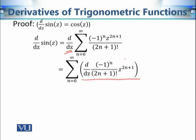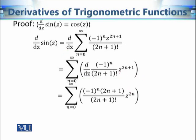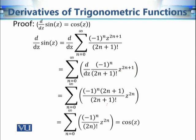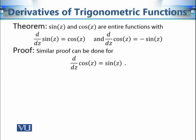Taking the derivative of the general term, we get the derivative of z raised to the power 2n+1, which is z raised to the power 2n. In the next step, simplifying: the factor (2n+1) from the power rule cancels with part of the factorial (2n+1) in the denominator, leaving factorial 2n. Using the series definition of cosine z, this is equal to cosine z. So we can easily prove that the derivative of sine z is equal to cosine z.